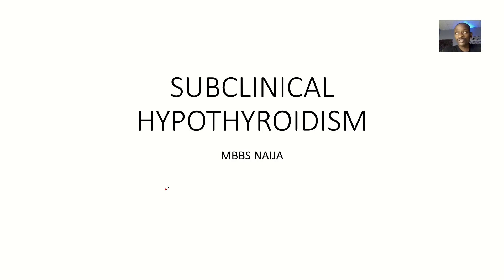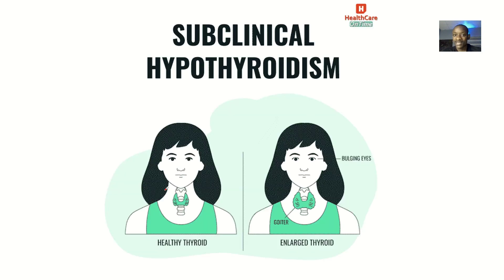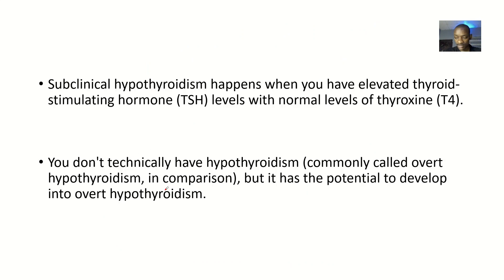There's another condition of the thyroid which is known as subclinical hypothyroidism. In this condition, the thyroid levels are going down, but you can't really say it has reached the level for hypothyroidism yet. So we'll define subclinical hypothyroidism and state the characteristics of this disease condition.